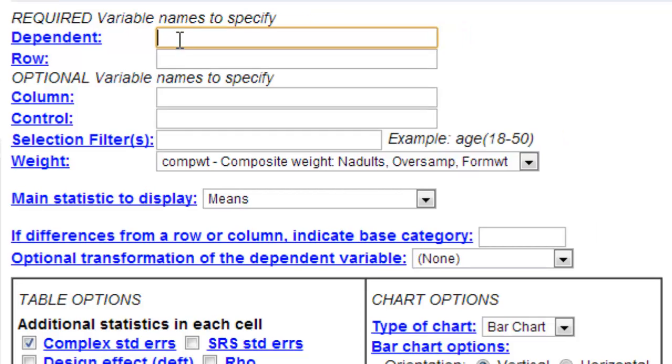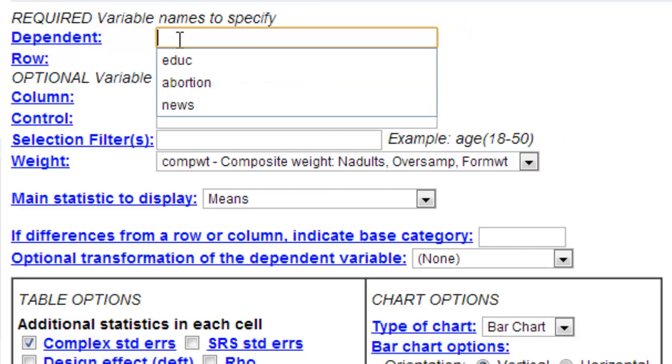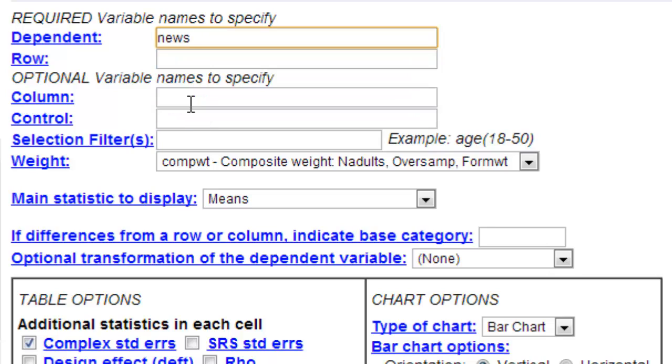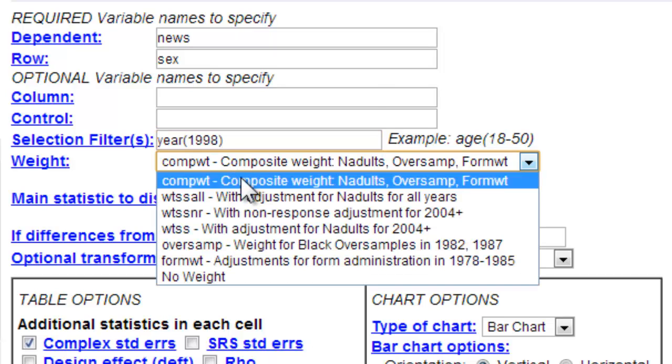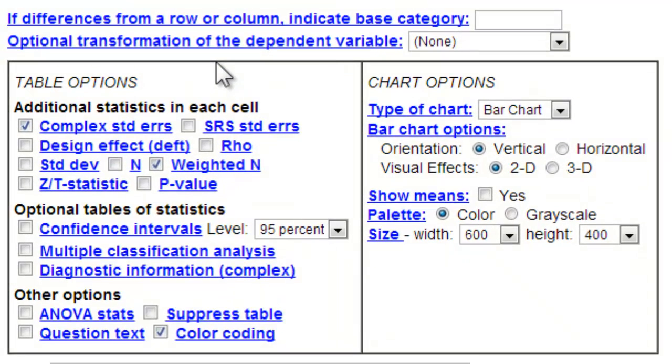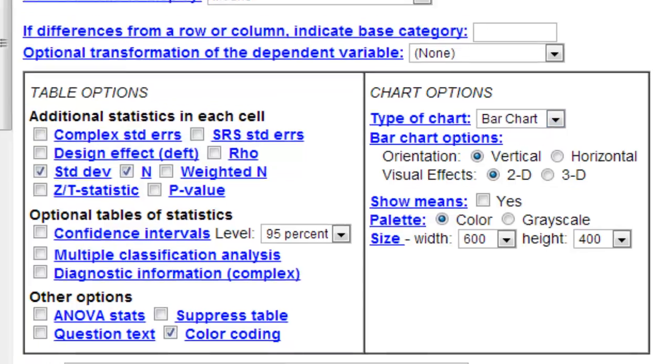My dependent variable when I type in this cell will bring up my old variables I've used before. You'll have to type those in by hand. My row variable is sex. My selection filter I'm going to do this for 1998. I want to make certain to take no weights. Now down here I want to make certain that I'm getting the right statistics in each cell. I'm not going to take the standard error but I want to make certain to get the standard deviation and the sample size. I think I've made the correct selections there. A bar chart seems fine and I think we're ready to go ahead and run the table.